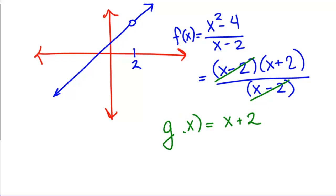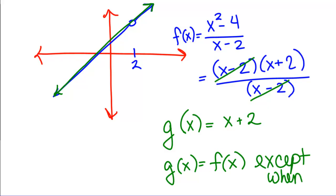G of x is the function x plus 2. It's the function that has exactly this line with no hole in it. But since we have a hole in our function at 2, F of x isn't exactly the same. It has a different domain, different x values you're allowed to plug into it. So G of x is equal to F of x, except when x equals 2.